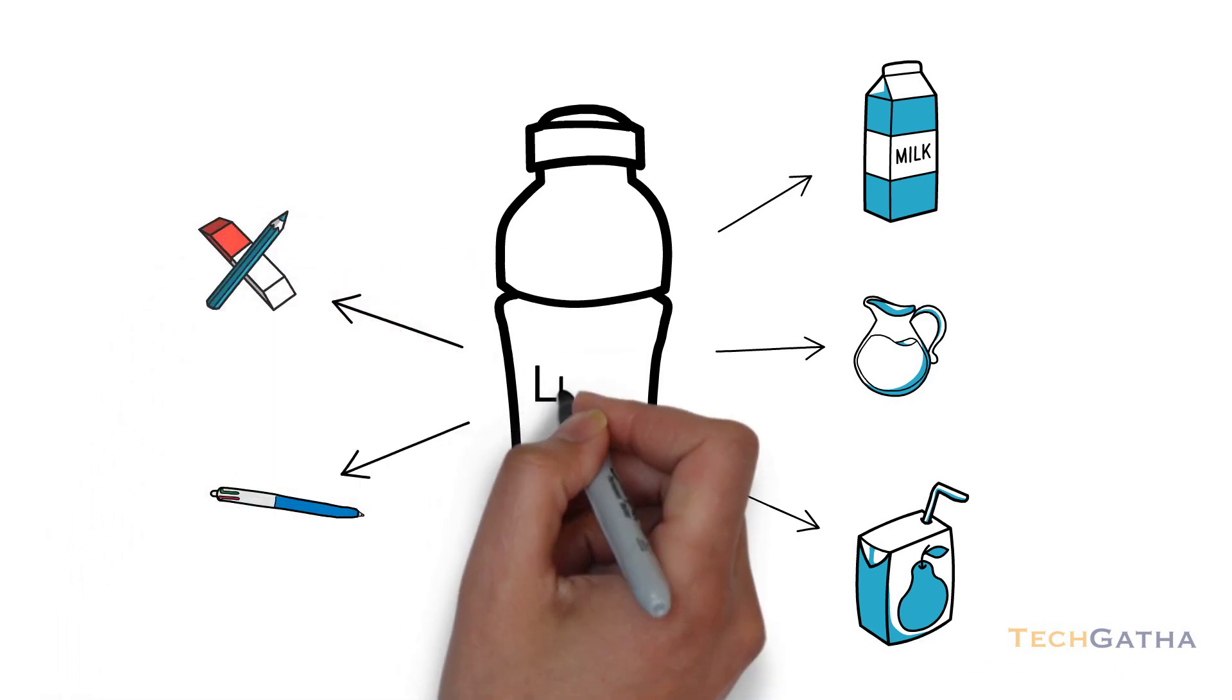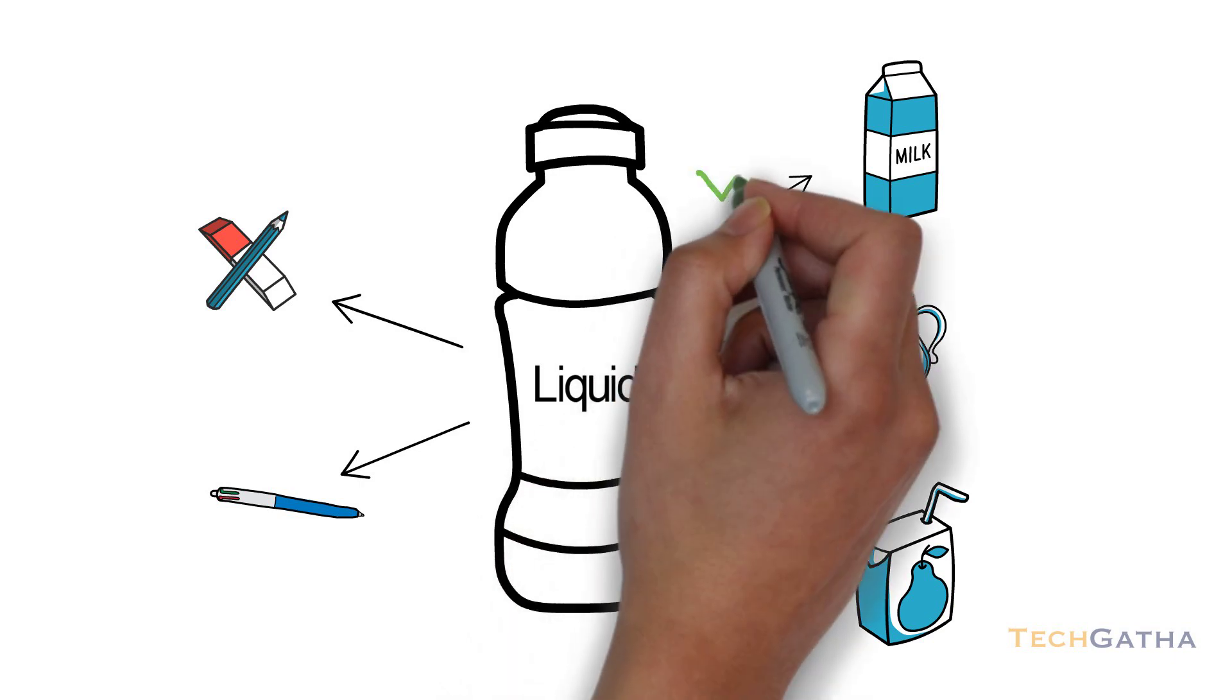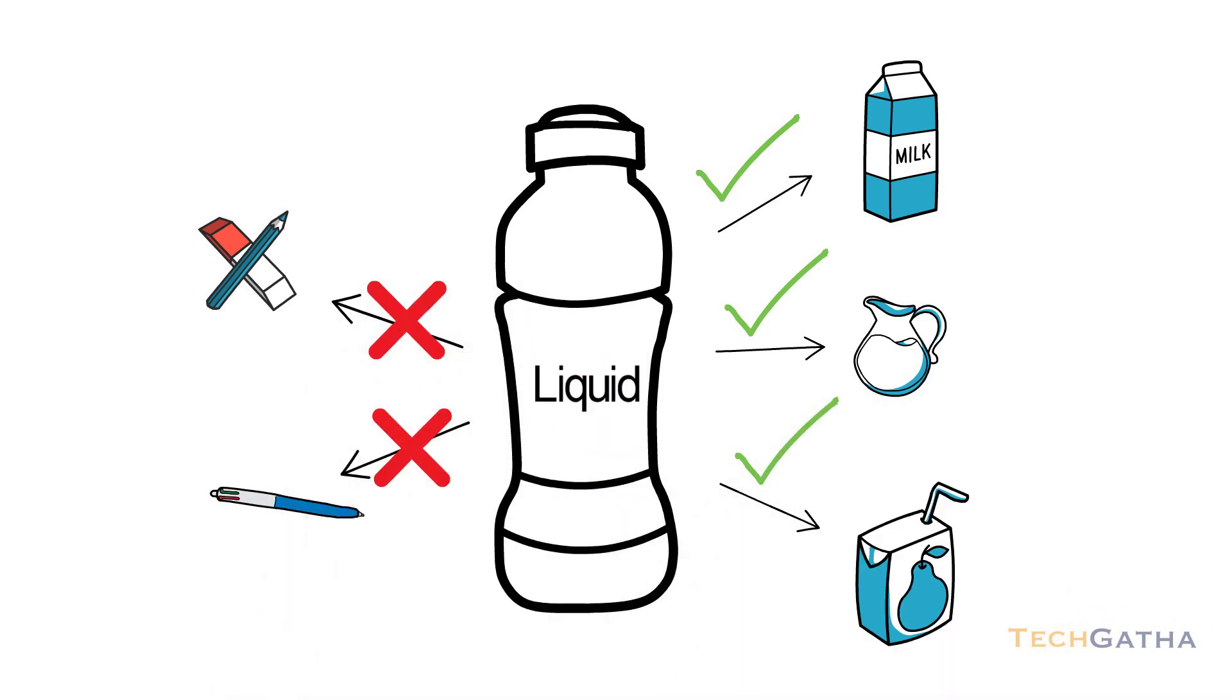But the moment I put a label, say as liquid, then this bottle will be used to store liquids and other types of items will not be stored.